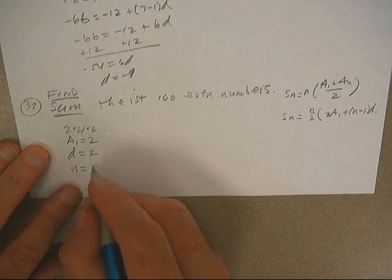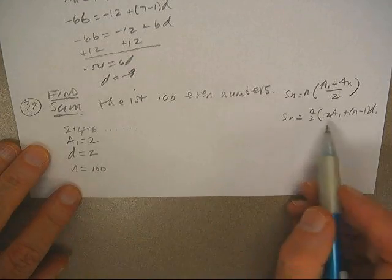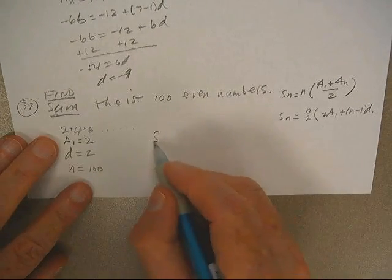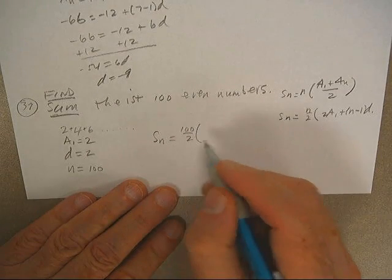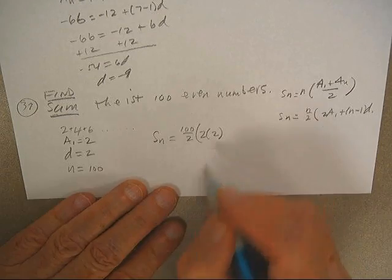The number of numbers is a hundred, so we really want to use that formula. The sum would be a hundred over two, two times the first term,